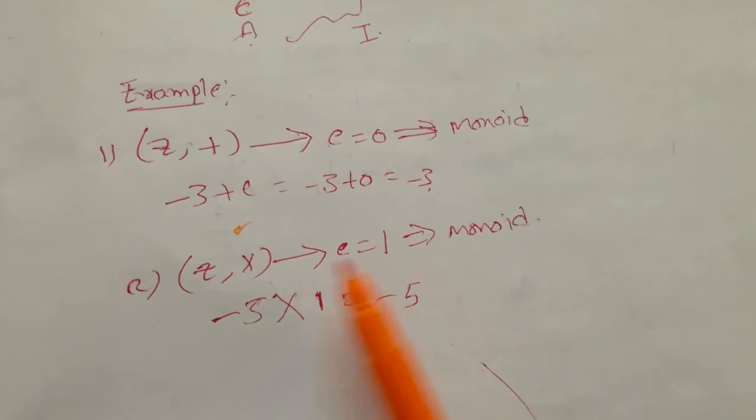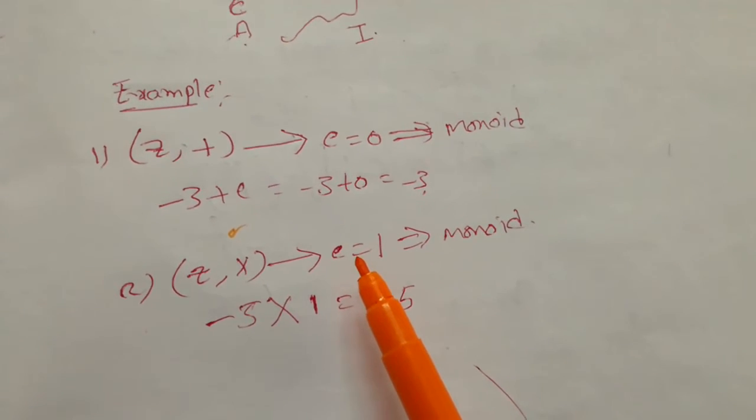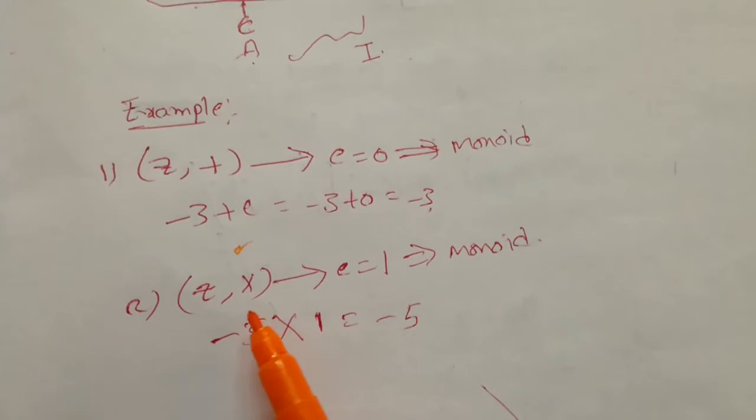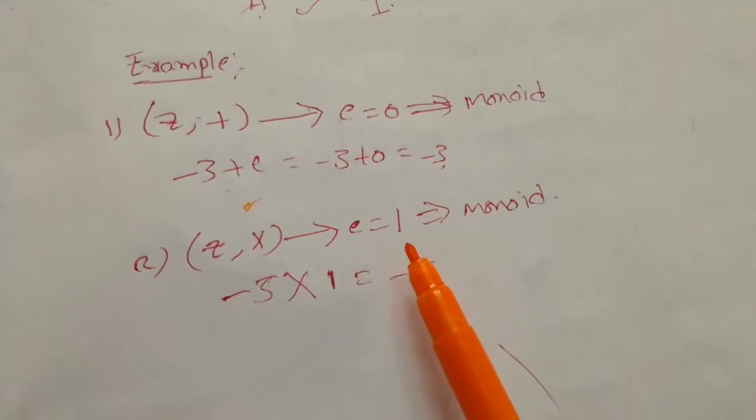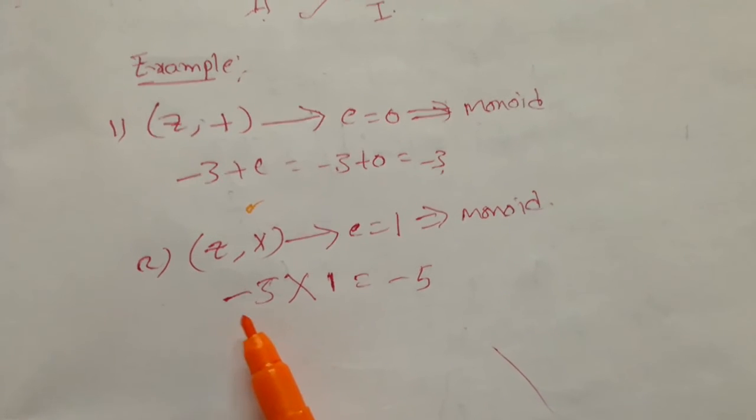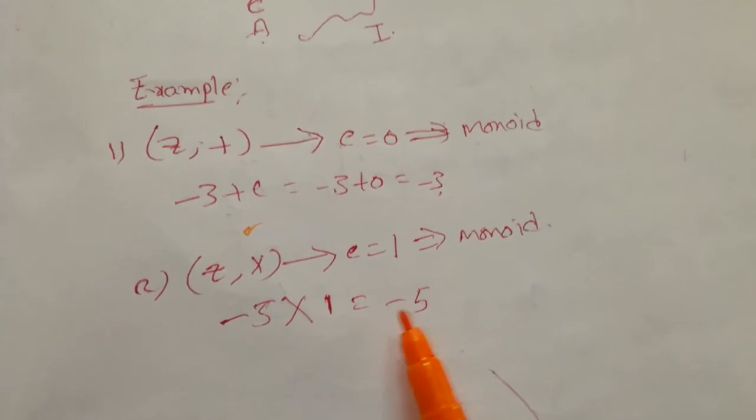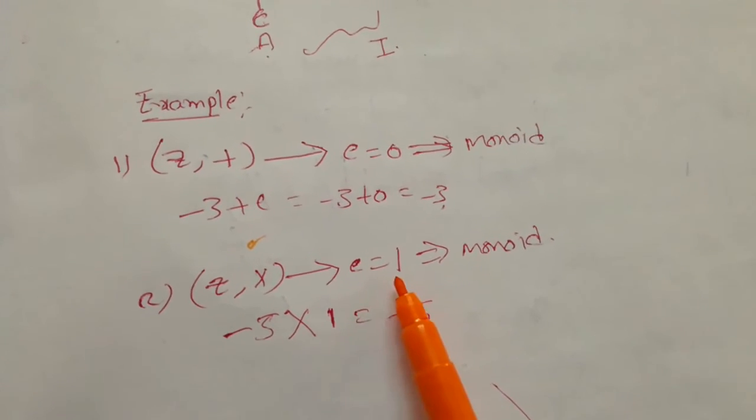Z dot, or Z cross, has the identity element E equals 1. So Z cross is also a Monoid where E equals 1. For example, minus 5 times 1 again gives you minus 5, so the identity element E is 1.